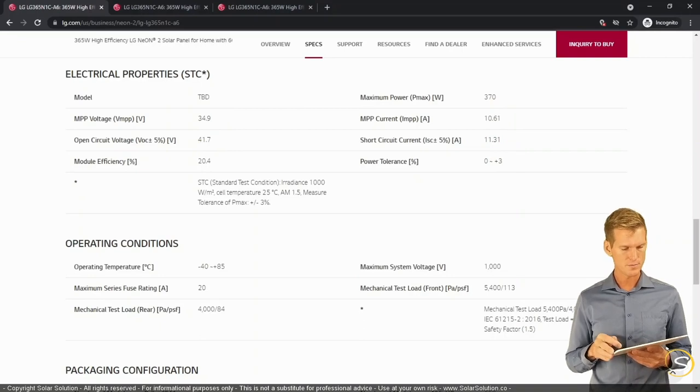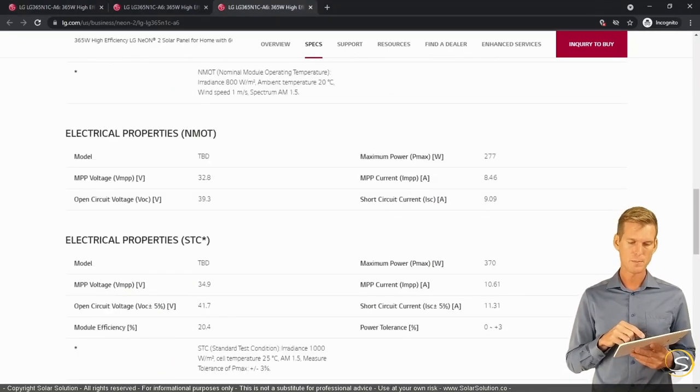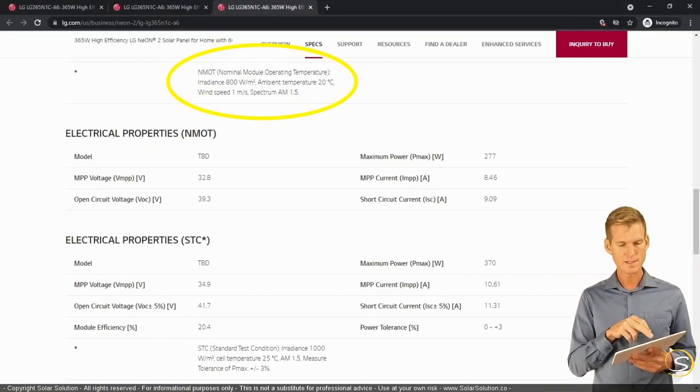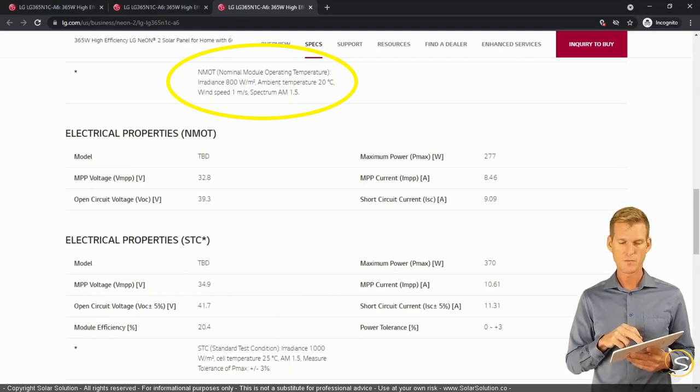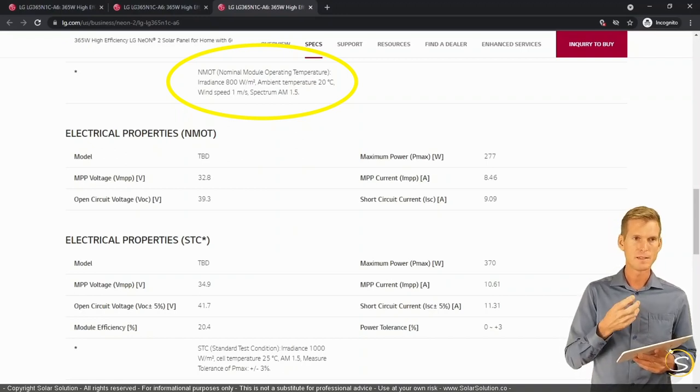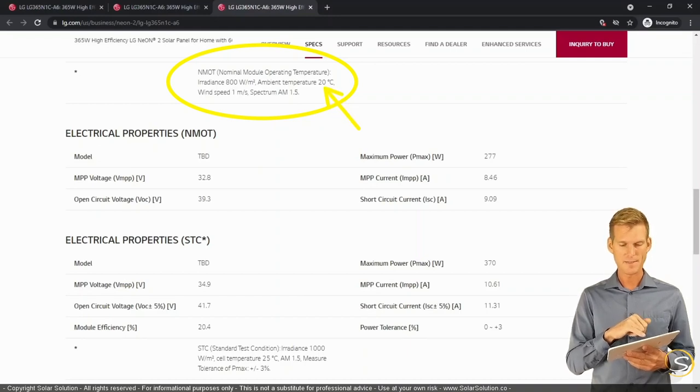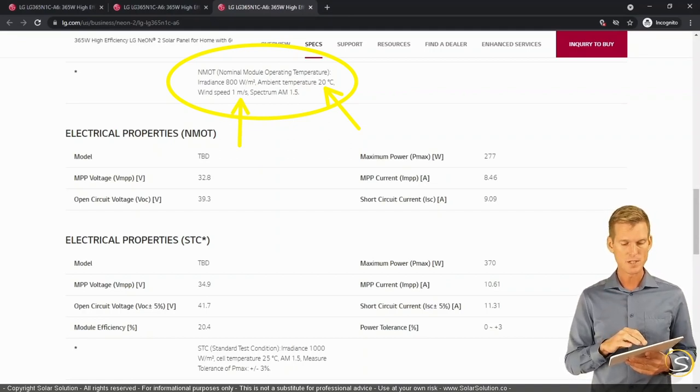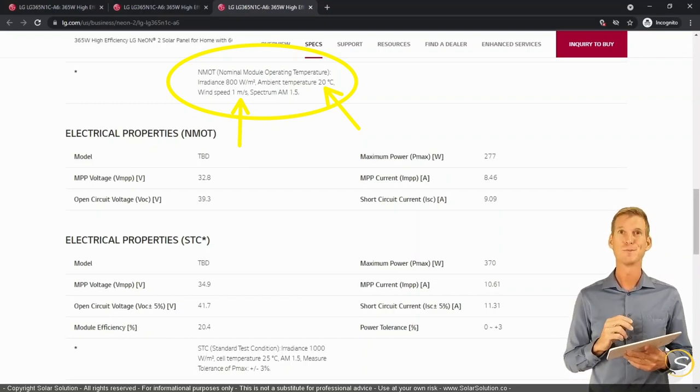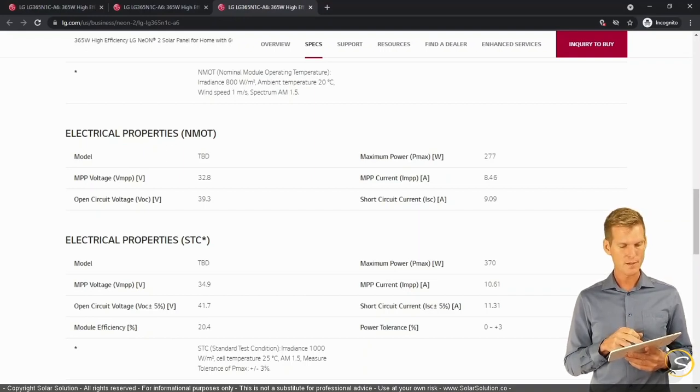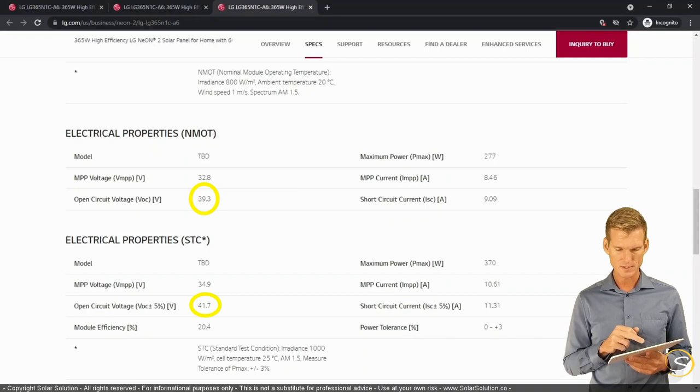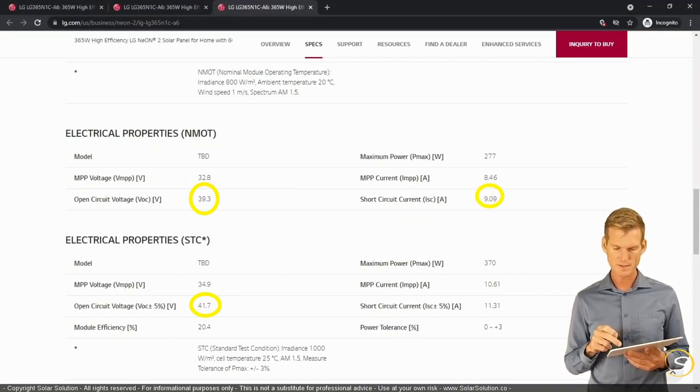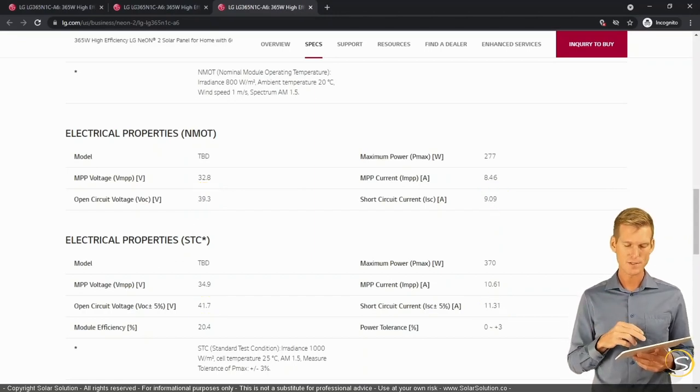Now there's another value that you might come across as well, which is called the NMOT, the Nominal Module Operating Temperature. So it's just a different set of test conditions. So here you can see that for testing the same panel, they've used a lower irradiance setting of 800 watts per square meters. And instead of keeping the cell temperature steady, what they're doing is they keep the ambient temperature steady and then the amount of wind speed steady, so ambient temperature is 20 degrees Celsius or 68 degrees Fahrenheit, and the wind speed is one meter per second, which is really, really low. You can barely feel one meter per second. So you can see that under these test conditions, we have a lower open circuit voltage, 39.3 versus 41.7 under STC test conditions. And the short circuit current is 9.09 versus 11.3, which makes sense, because under NMOT, the irradiance level is lower. Instead of 1000, it's 800 watts per square meters.